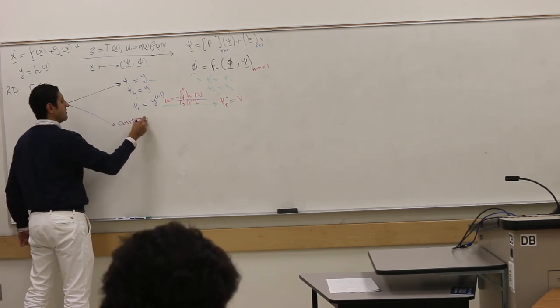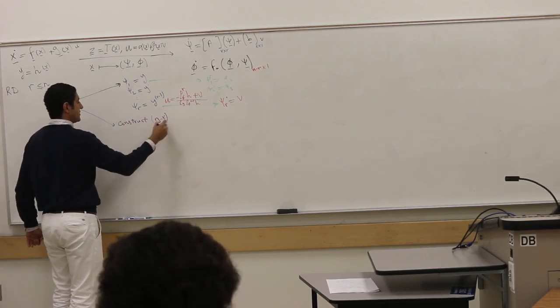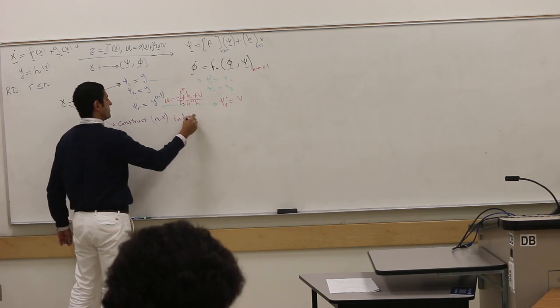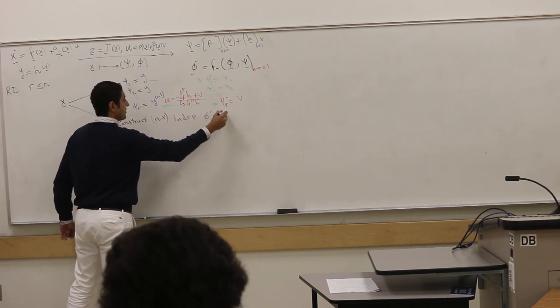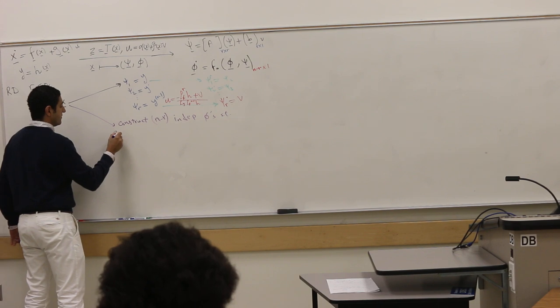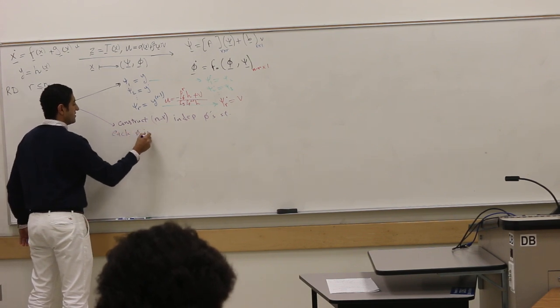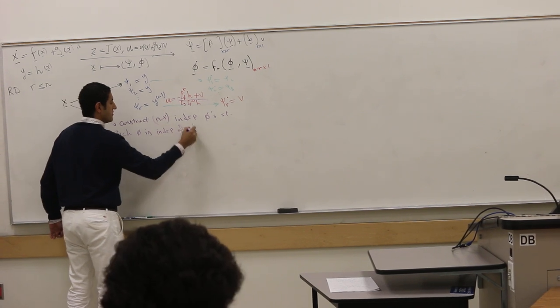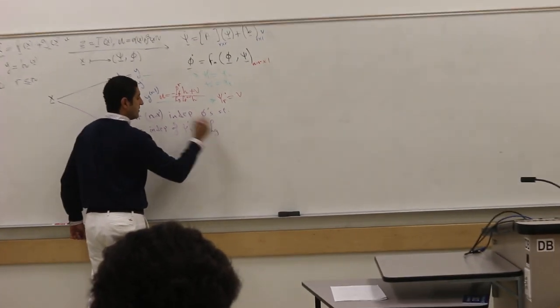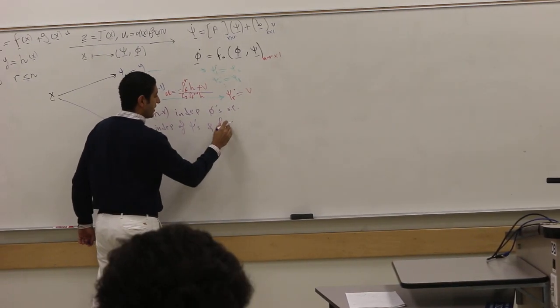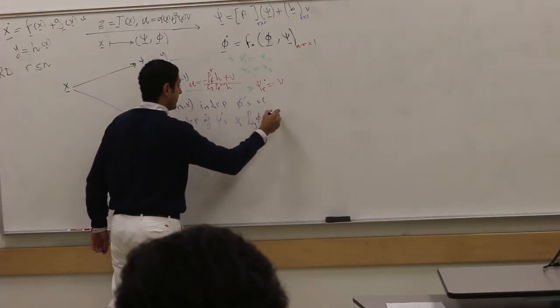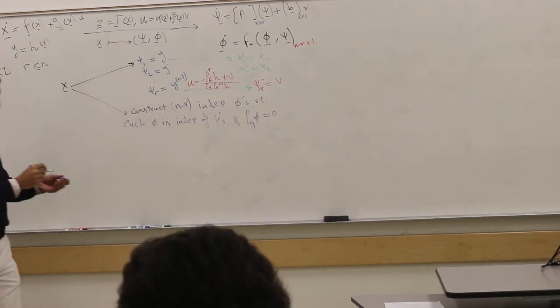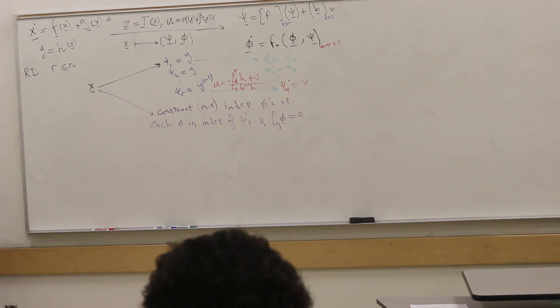We're going to construct N minus R, the rest, independent φ's, such that each φ is linearly independent of all ψ's, and its dynamics is void of the input, so L_g φ is zero. This is a linear differential equation that gives you φ.